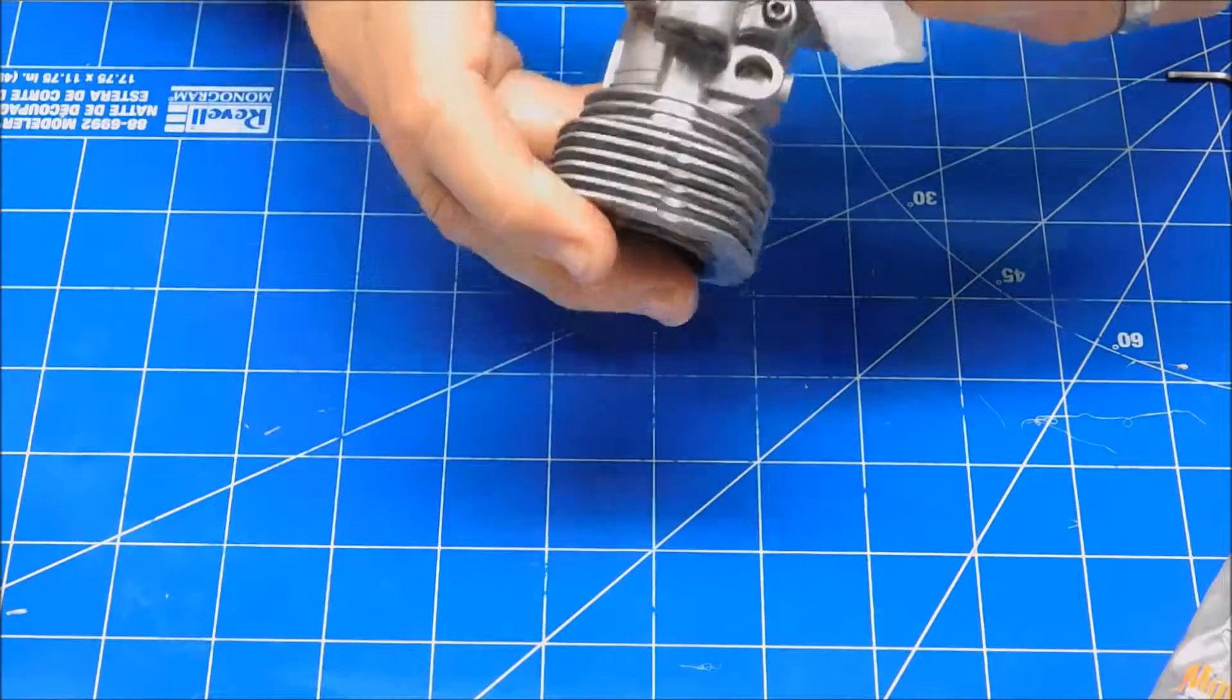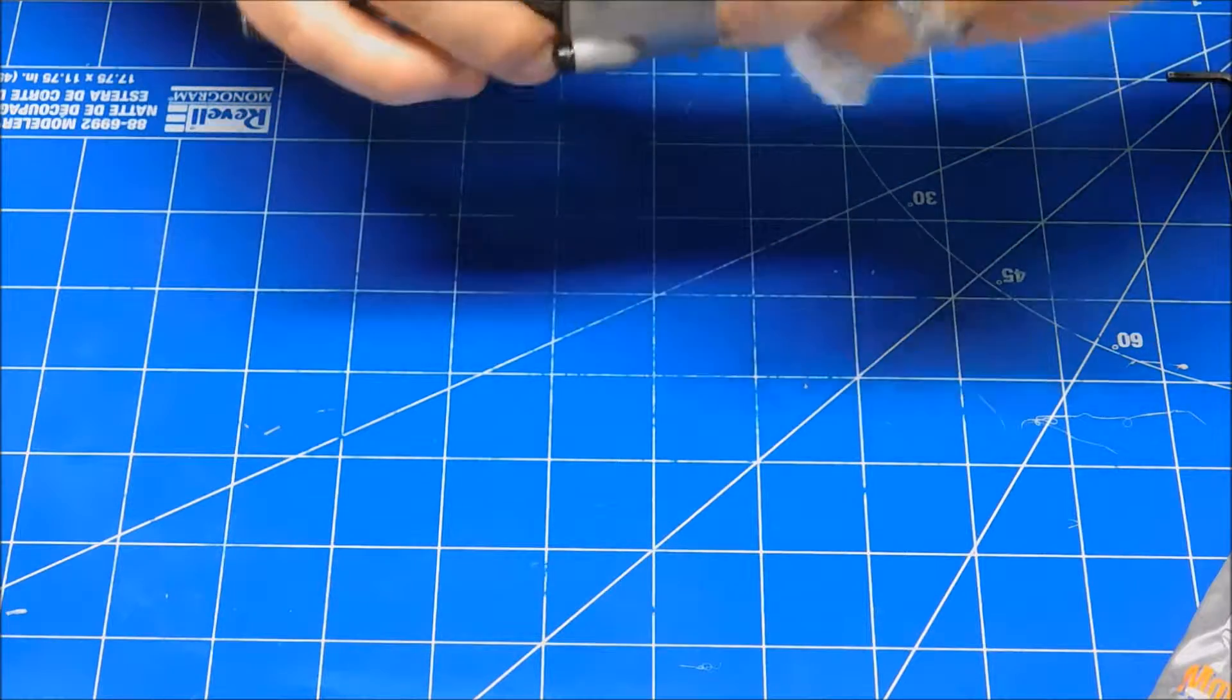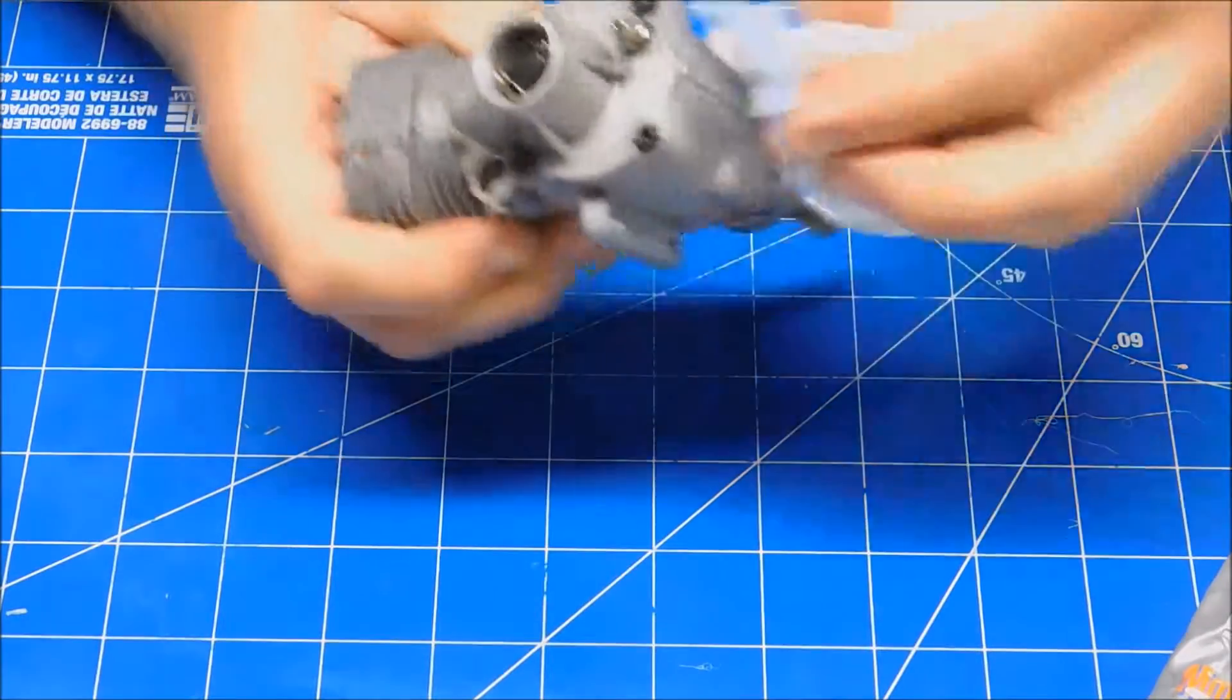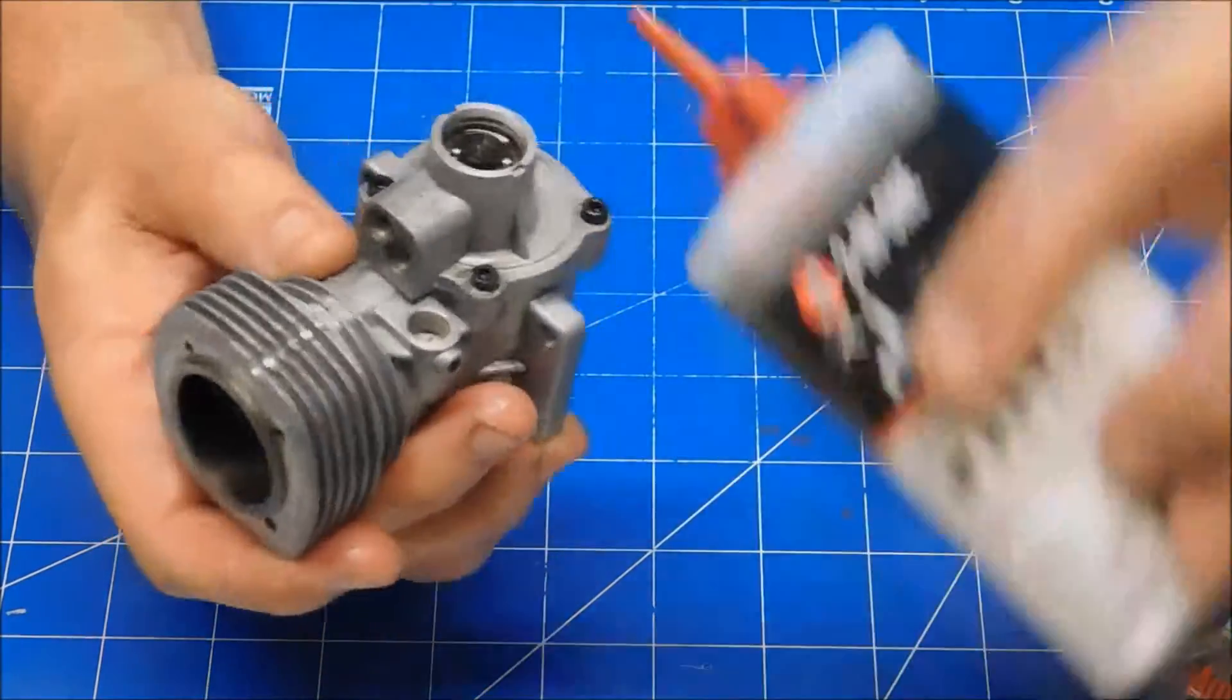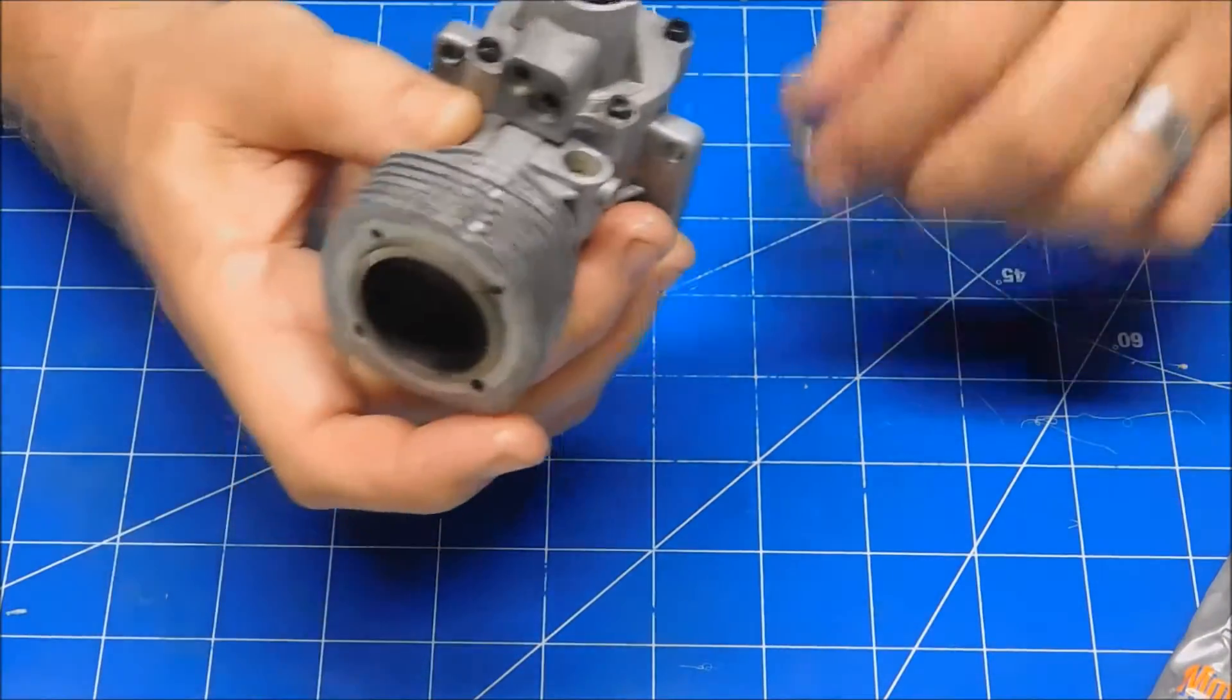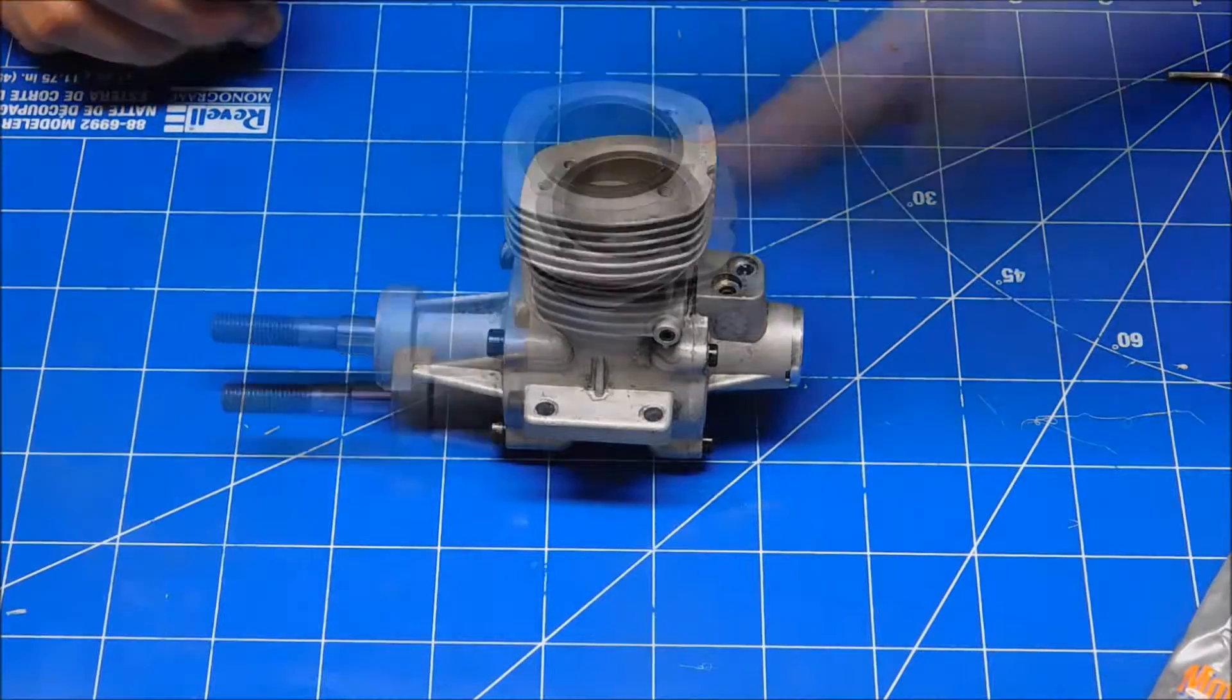So I'm going to clean this gasket maker off that squeezed out. Okay, this engine is timed. Now we can continue on with the rest of the installation. I'm going to load this area up with quite a bit of oil, just because it doesn't get a whole lot. Now, that thing is all oiled up, ready for the next step.